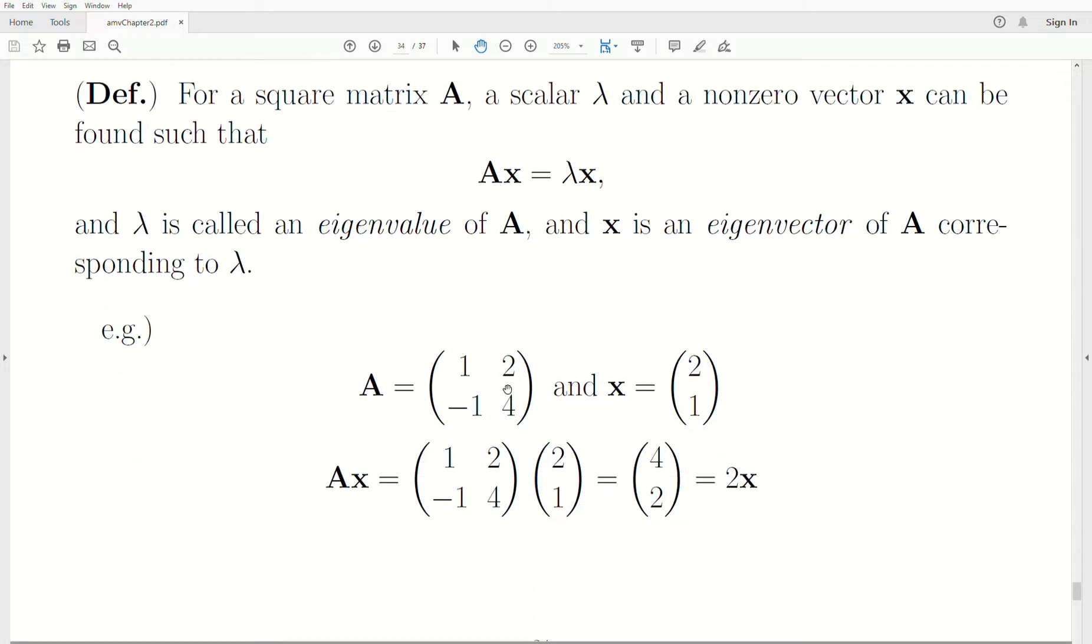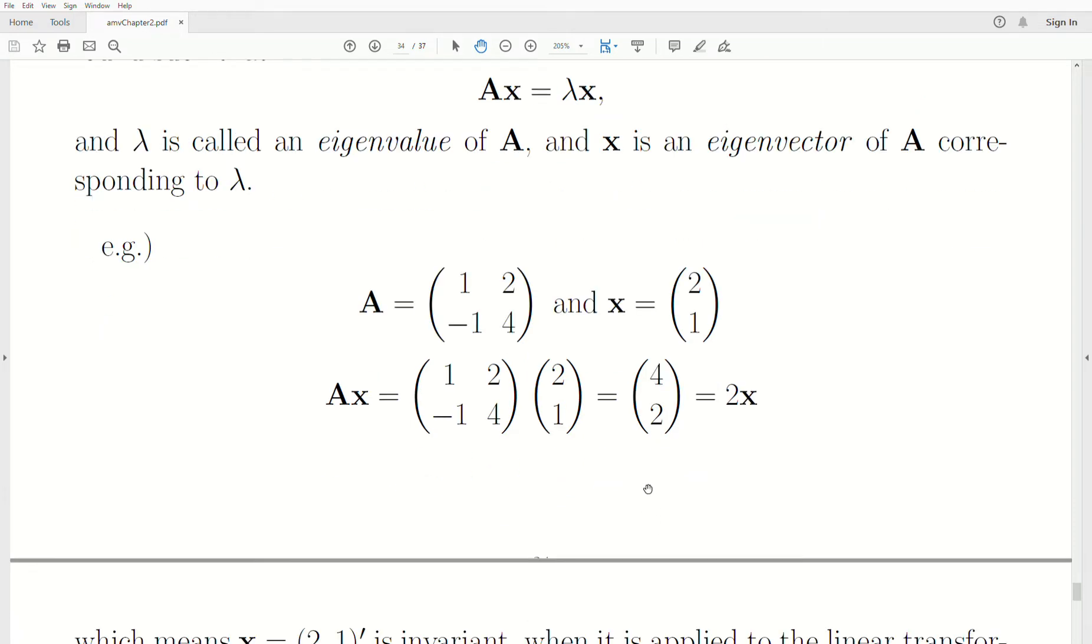Here's a quick example. Let's let A equal this, and if we do this matrix product here, that equals (4, 2), but we can factor out a constant 2, and then that's 2 times x. So Ax is equal to 2 times x. That says 2 is the eigenvalue and x, which is (2, 1), is an eigenvector.